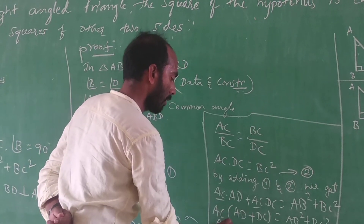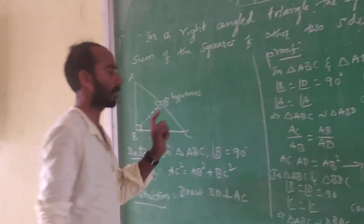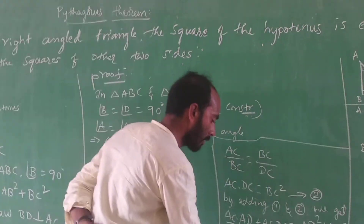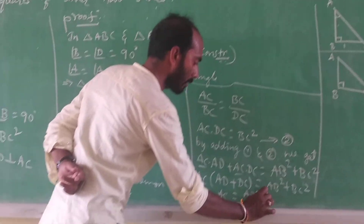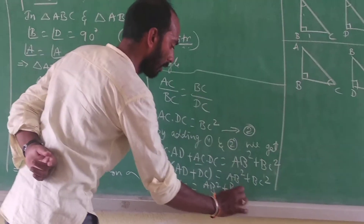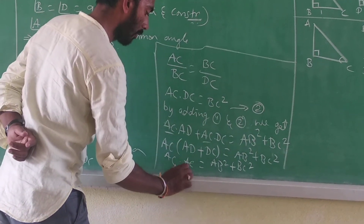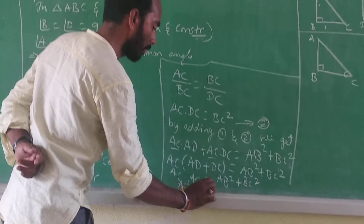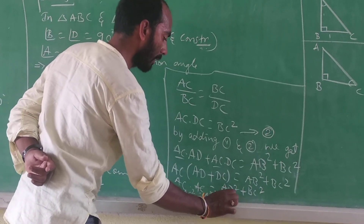So this is AC. AC² equals AB² plus BC². Here is AC squared. This is proved for all — AC² = AB² + BC².